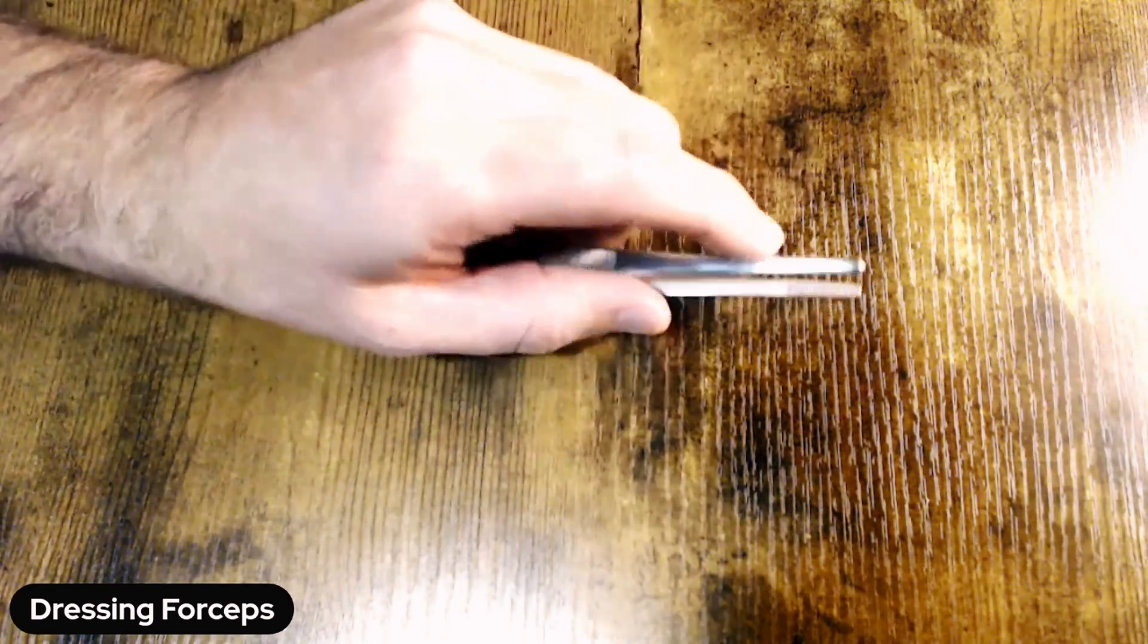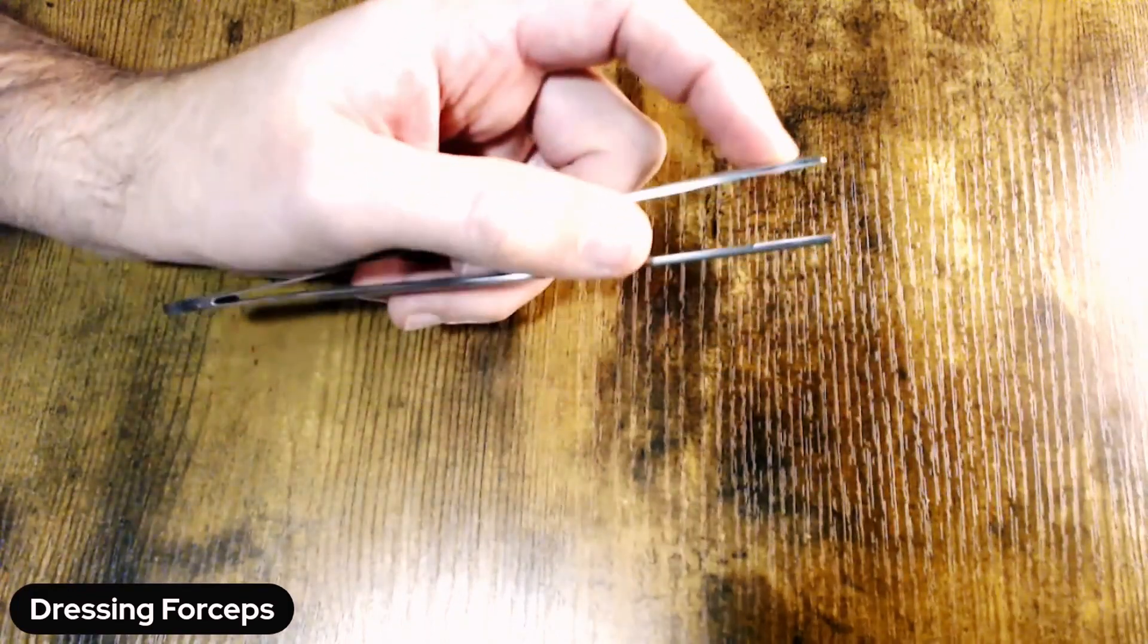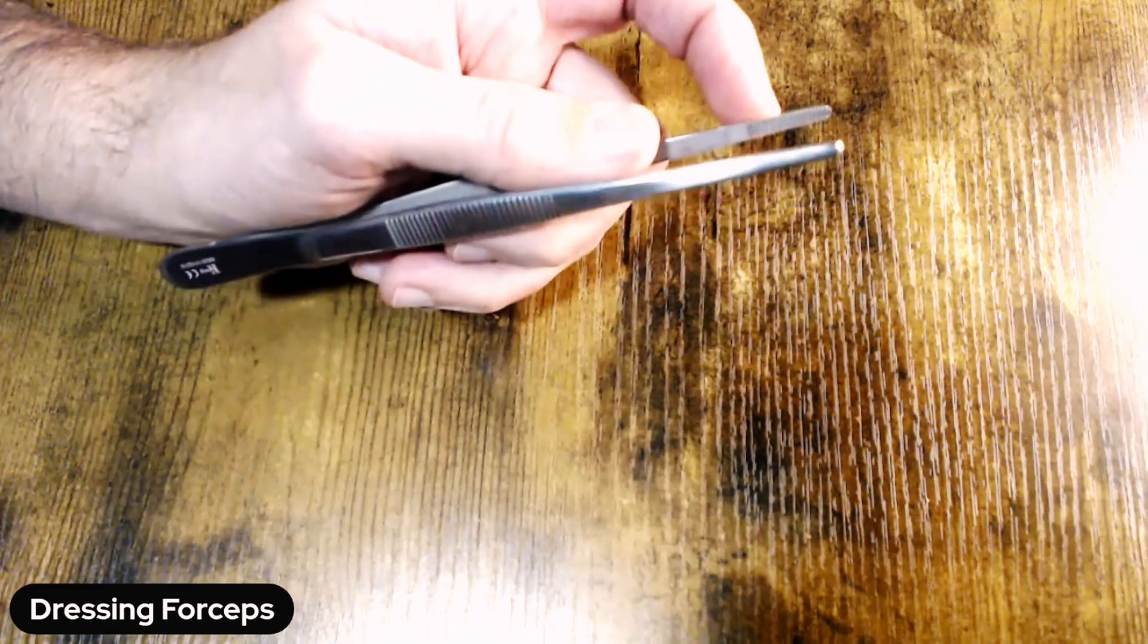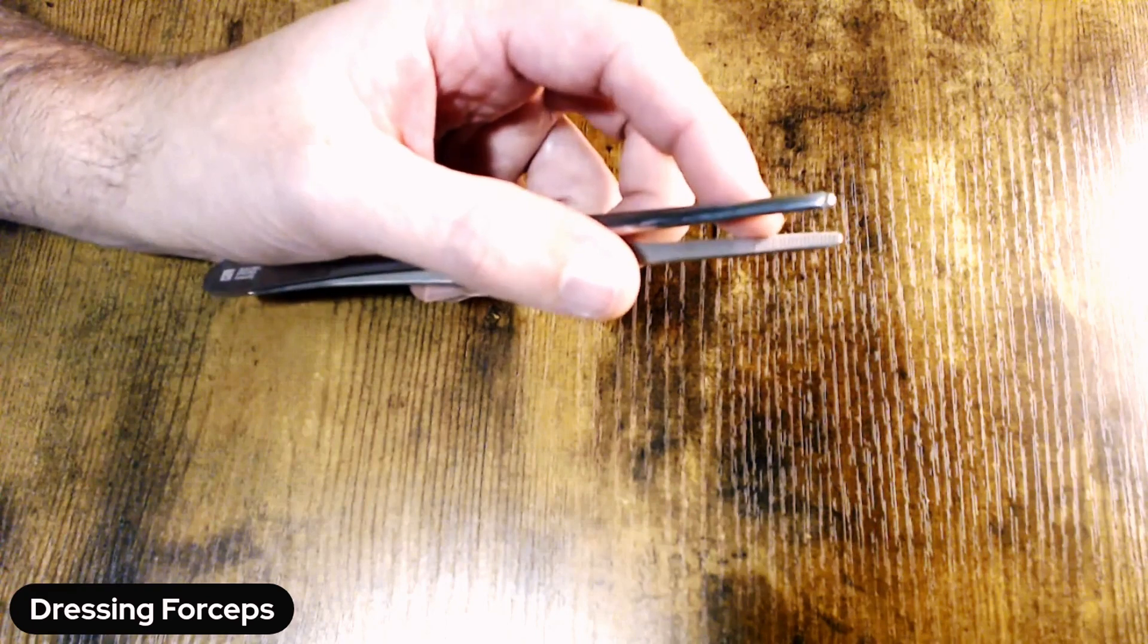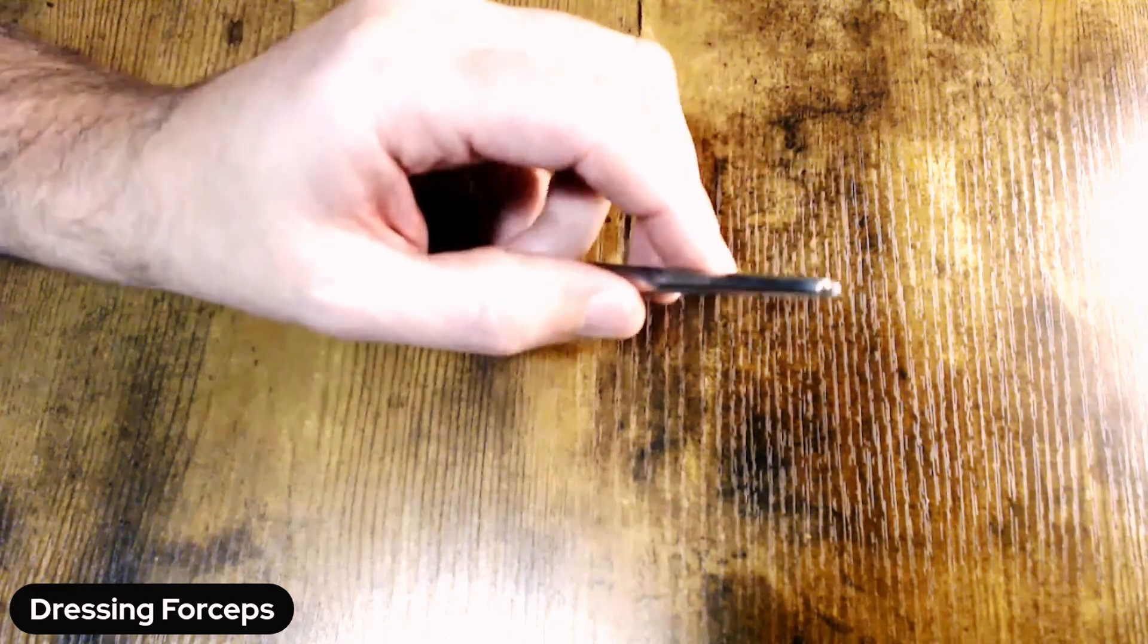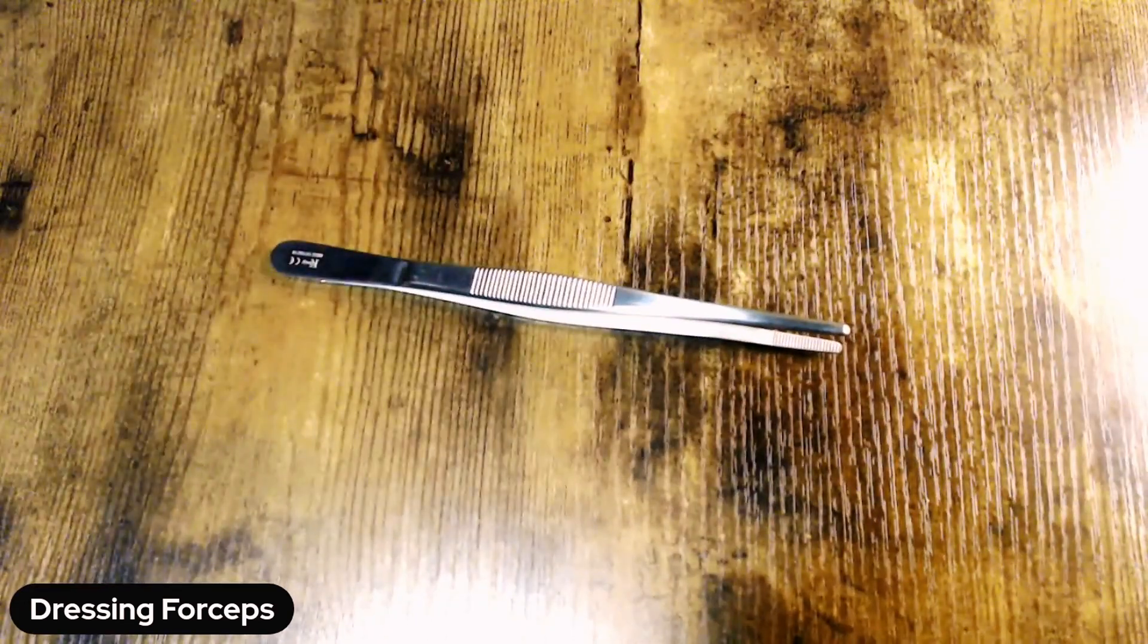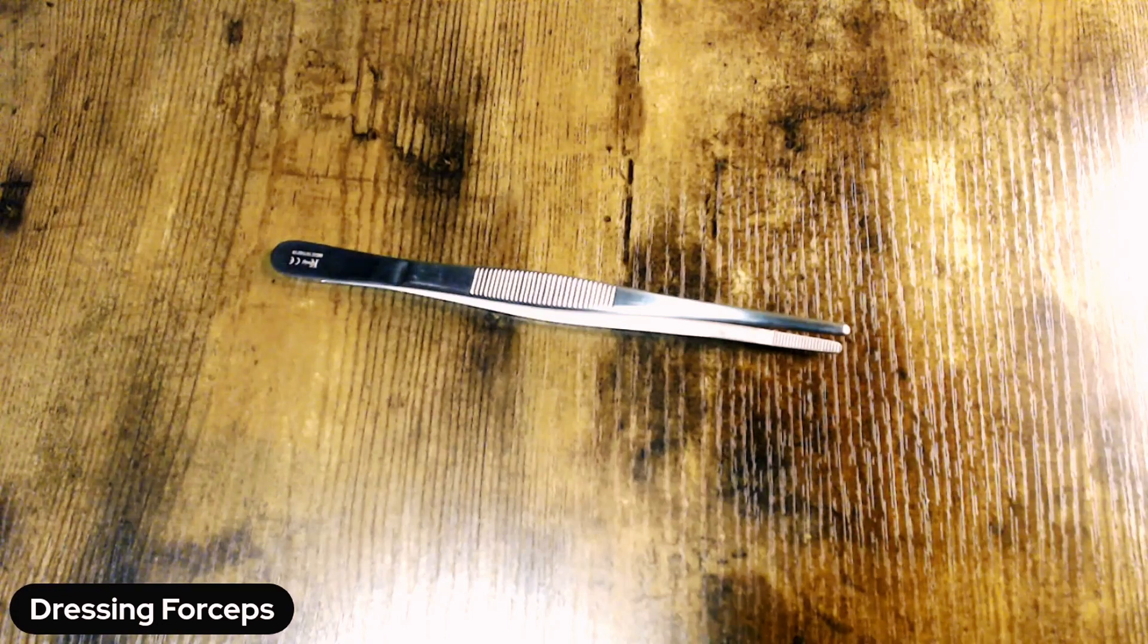Again, the tip-off here, if you're looking closely at the tips, is you want to make sure that there are no teeth on the very end of that distal portion or that there's no teeth or other additions to the side of that jaw of the forceps. So if everything is just a simple serration, most likely you're going to be dealing with a dressing forcep.